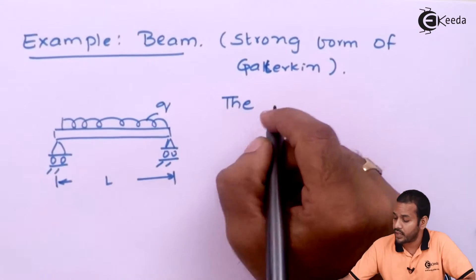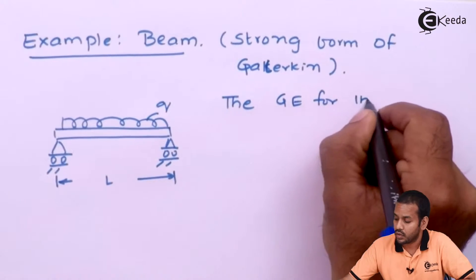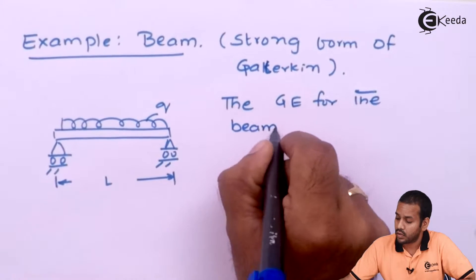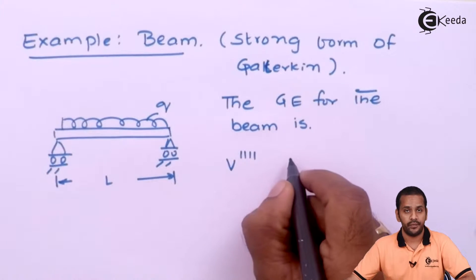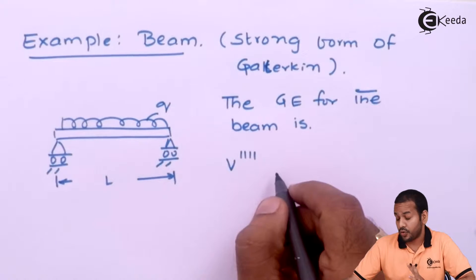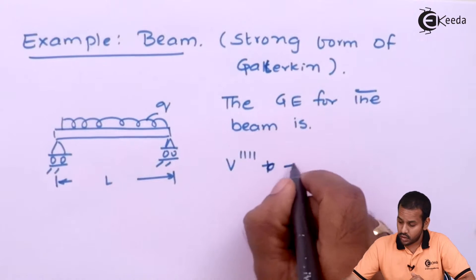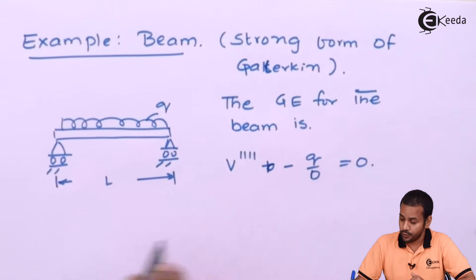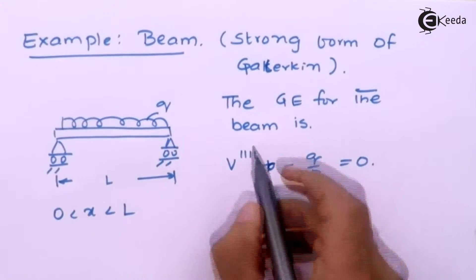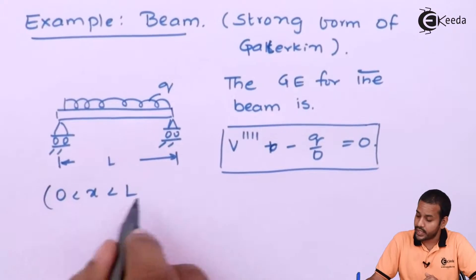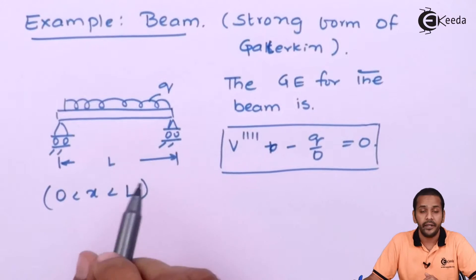All of us have learned from solid mechanics since second year. The governing equation for the beam is d⁴V/dx⁴ minus Q/EI equals 0, where EI is the flexural rigidity. This is the domain of the problem. Let us solve this equation using the Galerkin method.